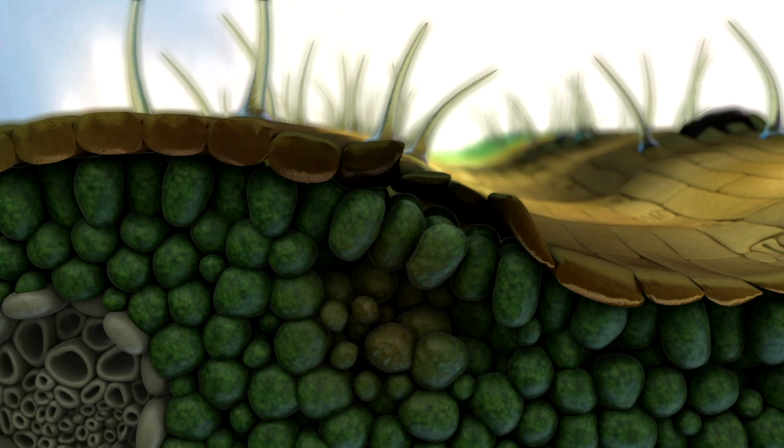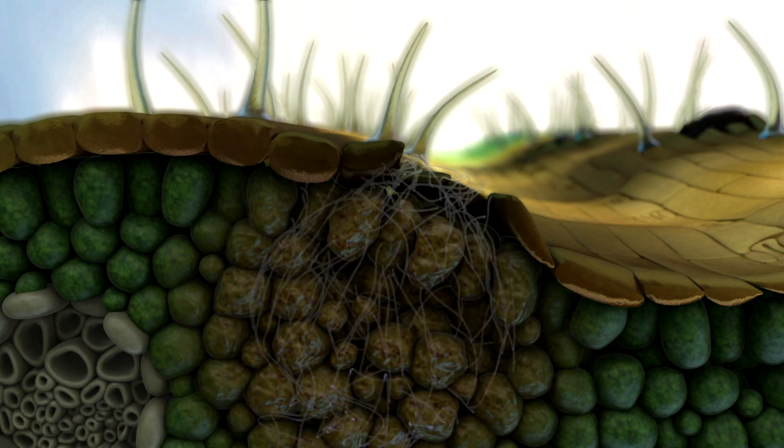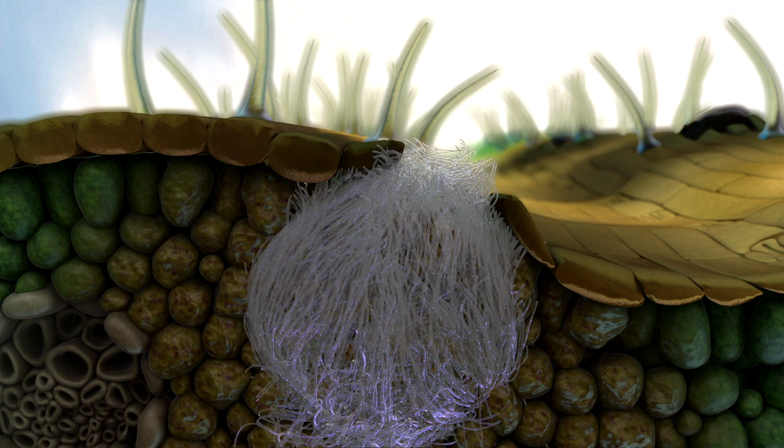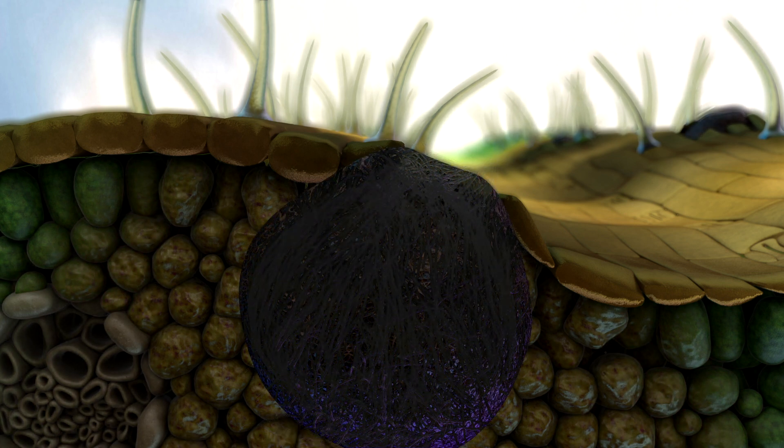For its next attack on the plant, Septoria grows fruiting bodies, the Pycnidia, which appear as dark spots on the leaf. Here, it produces large amounts of spores.